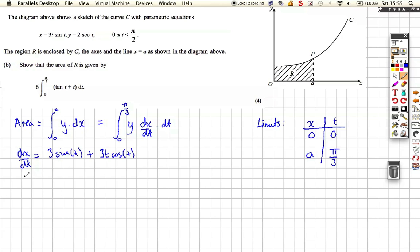So let's put that all back together when we want to do our integration. So really, for the area, we're doing the integration between 0 and pi over 3 of Y, and our value of Y is 2 sec T, and we're multiplying that by 3 sine T plus 3T cos T, all with respect to T. Now we can rearrange this, so that becomes 0 between pi over 3, well, if we do the 2 times the 3, it means we're going to have to take a 6 out.